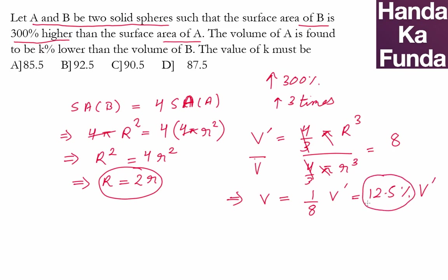Now, if it is 12.5 percent, how much is it lesser? Well, total is 100. The final value is 12.5. So the reduction is 100 - 12.5 = 87.5 percent, which is option D.